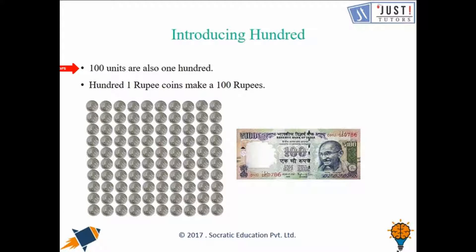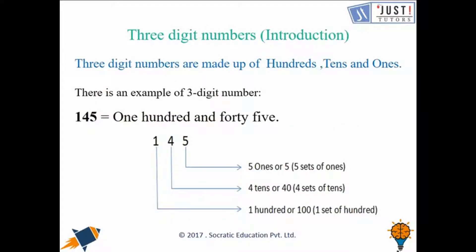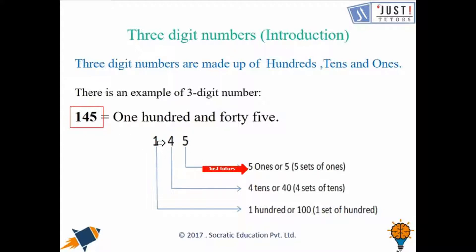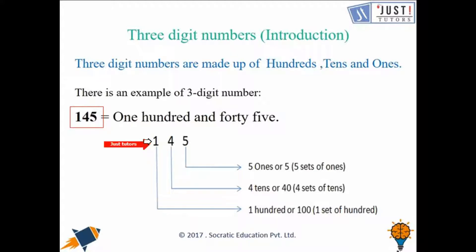Now let's move forward and learn about three-digit numbers. A three-digit number has hundreds, tens, and ones. Let's see how we can read and understand this example. It has five ones, four tens, and one hundred. That means we say it as one hundred, forty, and five — altogether: one hundred and forty-five.